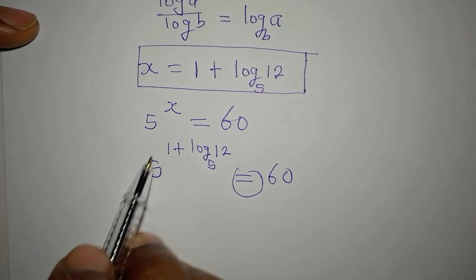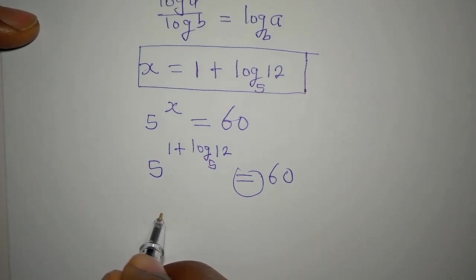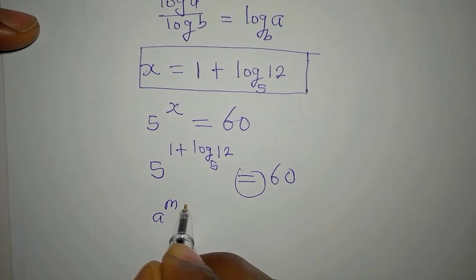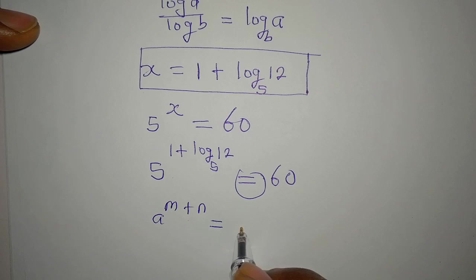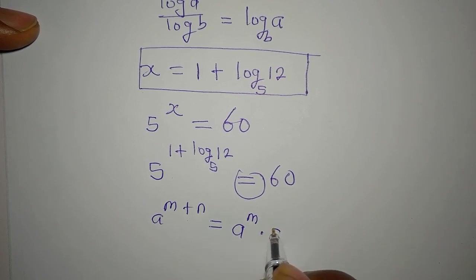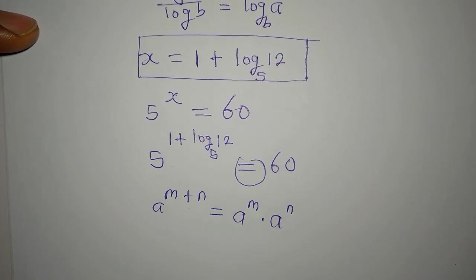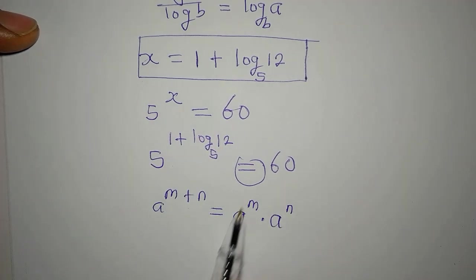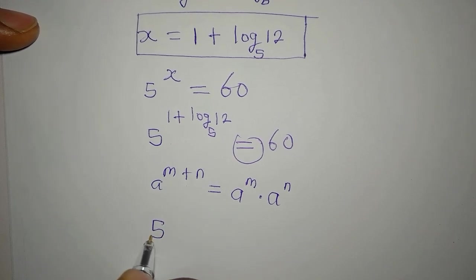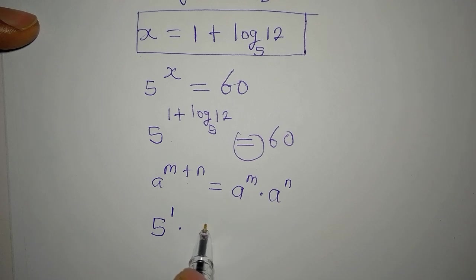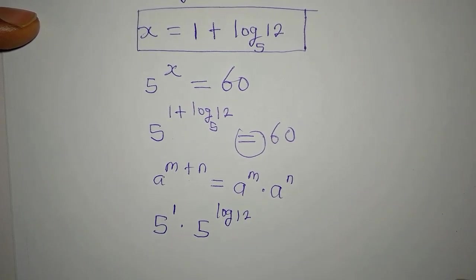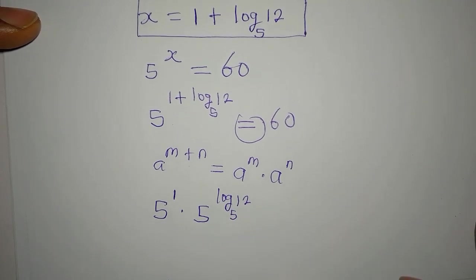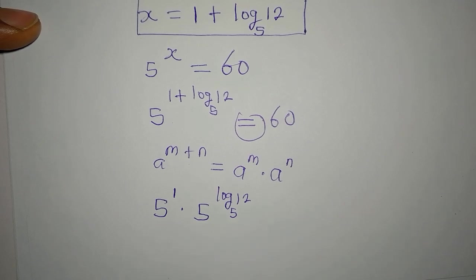From here we go to the laws of indices. If you have a to the power of m plus n, according to one of the laws of indices this is the same as a to the power of m multiplied by a to the power of n — you add the powers when the base is the same. So we express this in that form: 5 to the power of 1, multiplied by 5 to the power of log 12 to base 5. We want to see whether this gives us 60.